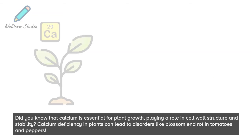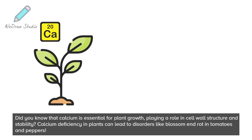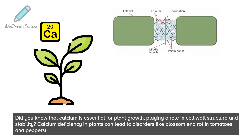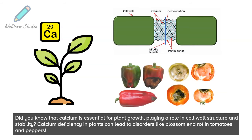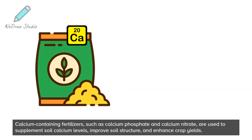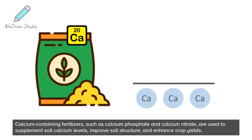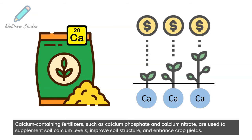Did you know that calcium is essential for plant growth, playing a role in cell wall structure and stability? Calcium deficiency in plants can lead to disorders like blossom end rot in tomatoes and peppers. Calcium-containing fertilizers, such as calcium phosphate and calcium nitrate, are used to supplement soil calcium levels, improve soil structure, and enhance crop yields.